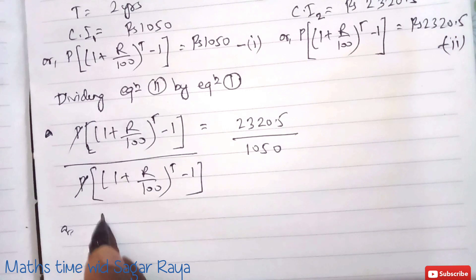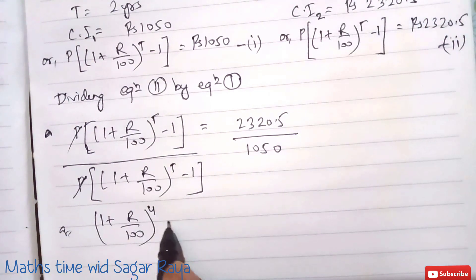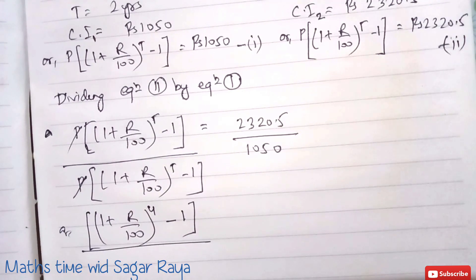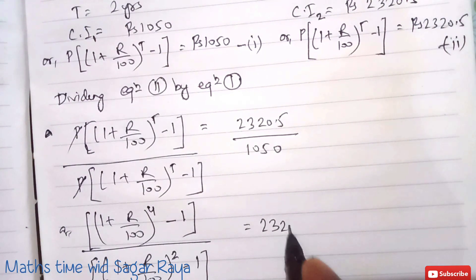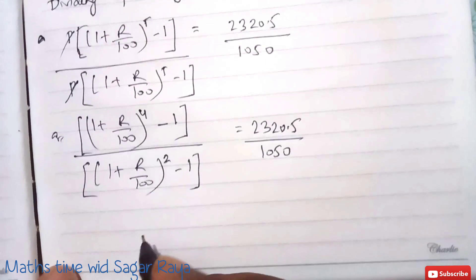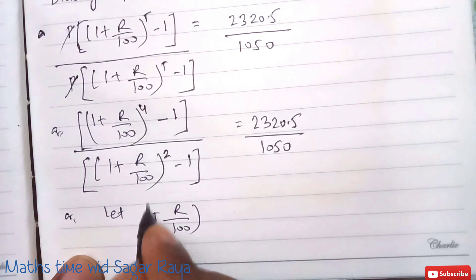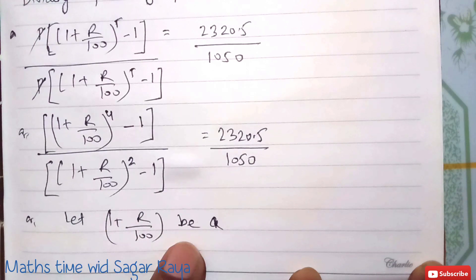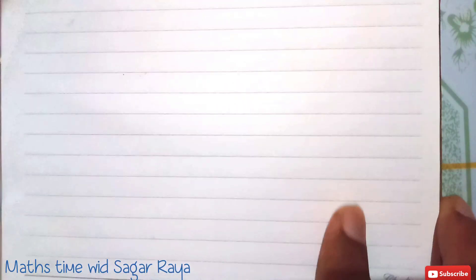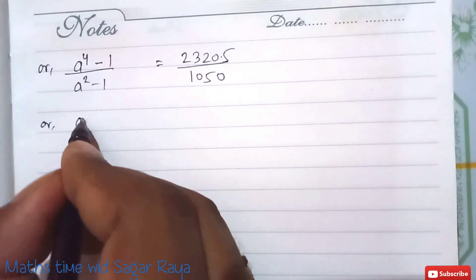After cancelling the principal, we get (1 plus R by 100) to the power 4, minus 1, divided by (1 plus R by 100) to the power 2, minus 1. The right-hand side is 2320.5 divided by 1050. Now let (1 plus R by 100) be 'a'. So the expression becomes a to the power 4, minus 1, divided by a squared, minus 1.